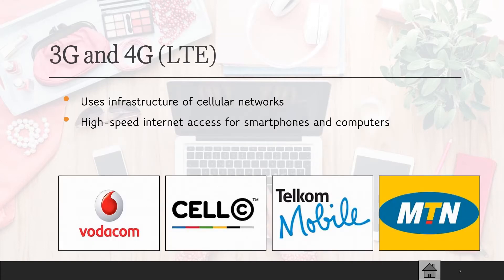3G and 4G are referred to as LTE. This uses the infrastructure of cellular networks, depends on cell phone operators, and gives you high-speed internet access for your smartphone and computer. But you need to have the cellular connection.